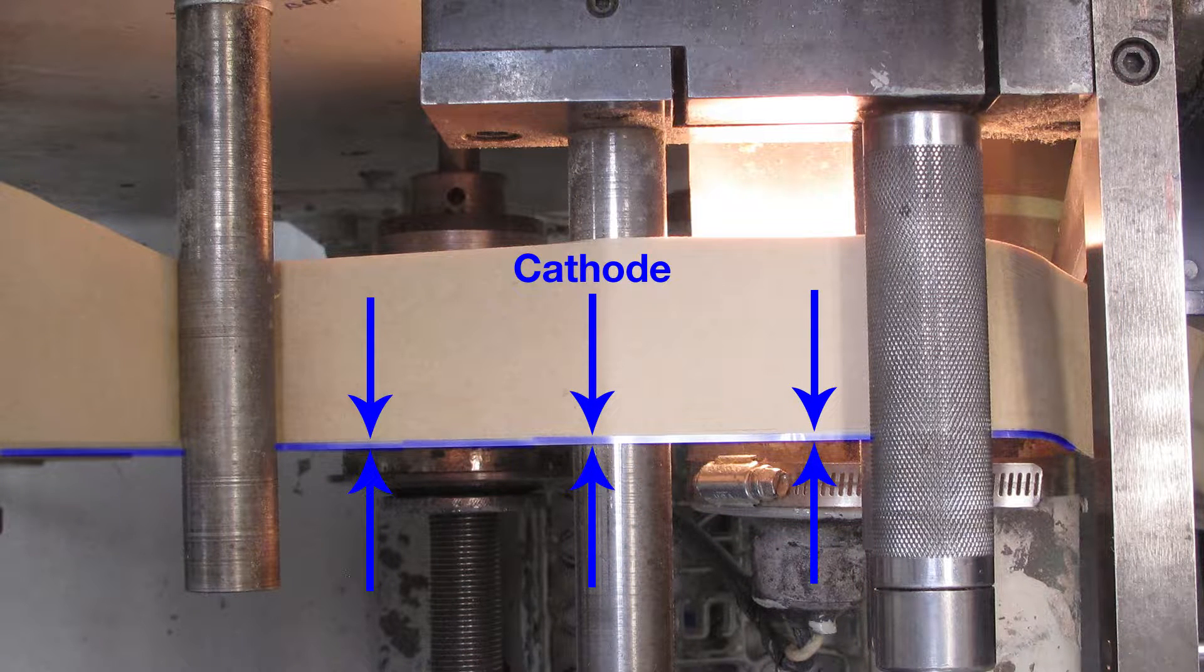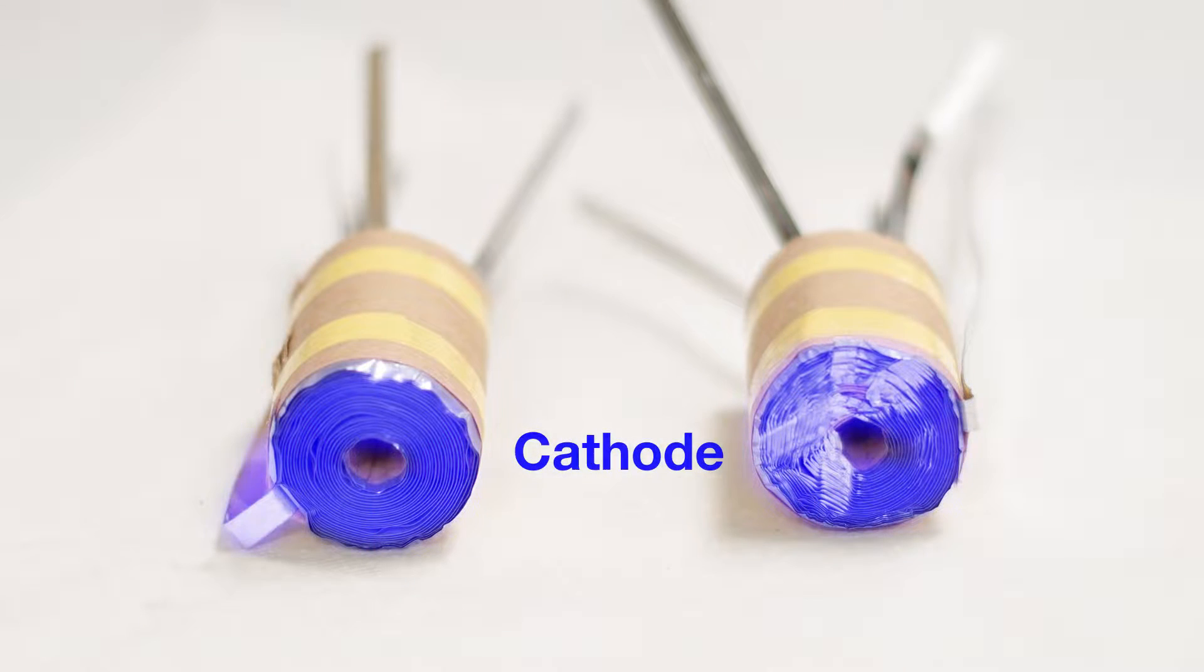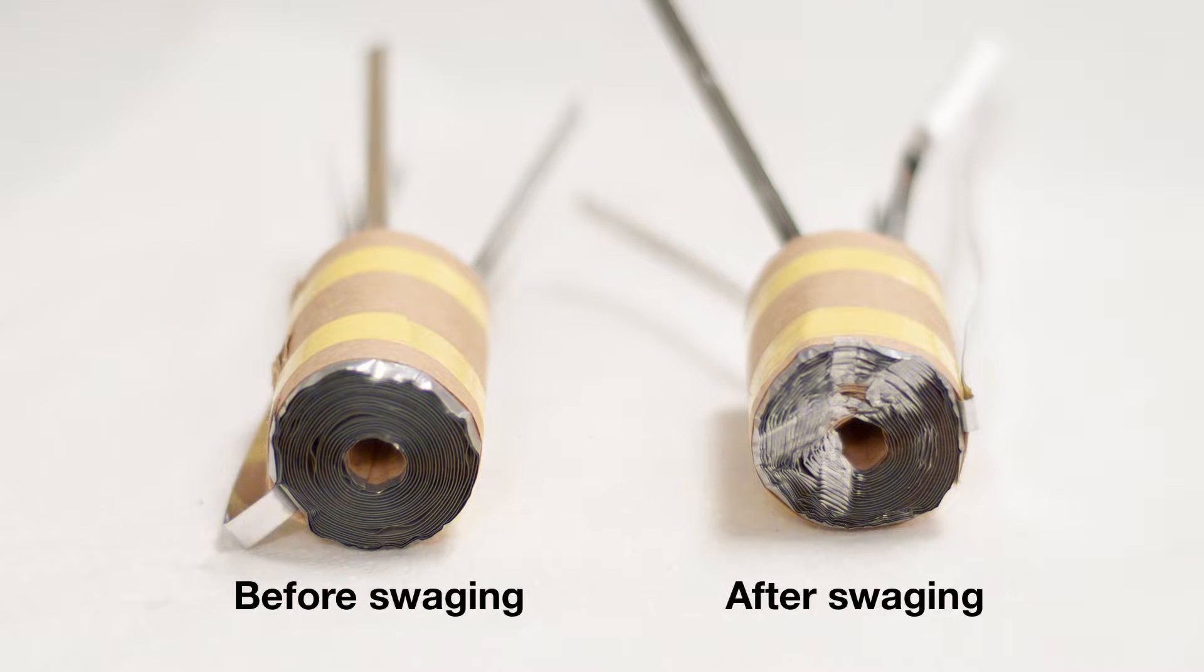In the swaging process we bump the coils of the cathode together, essentially fusing them so that they are touching one another. The swaging process reduces the ohmic resistance and the inductive effects in the cathode cartridge.